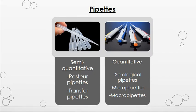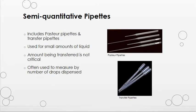There are two broad categories of pipettes: semi-quantitative and quantitative. Pasteur pipettes and transfer pipettes are examples of semi-quantitative — these are best used for small amounts of liquid when the amount being transferred is not critical, and they are often used to measure by number of drops. The image at the top shows glass Pasteur pipettes, which work by placing a small bulb on the top, and the bottom image shows disposable plastic transfer pipettes commonly used in the lab.